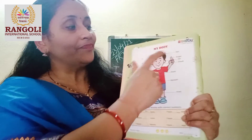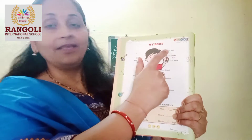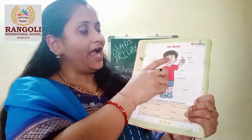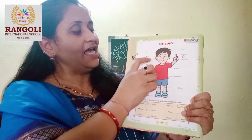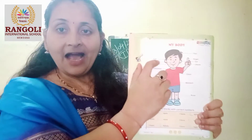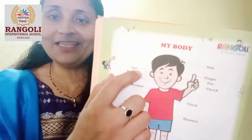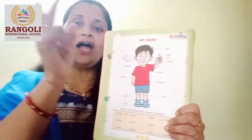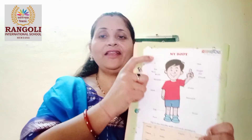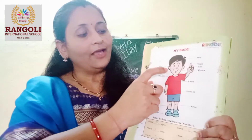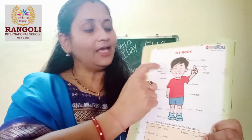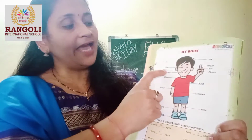Look at here. What is this? Hair. What is this? Hair. Then what is this? Eyes. What is this? Eyes. How many eyes? Two eyes, and we see with our eyes.